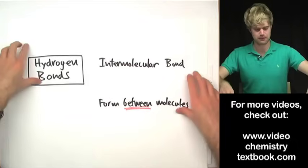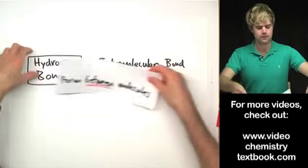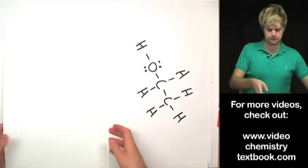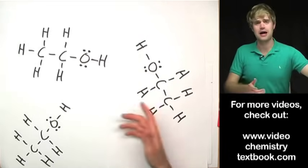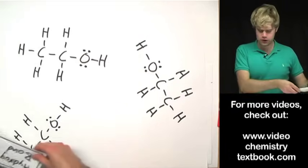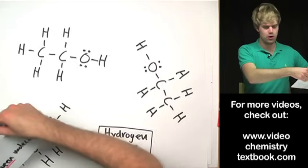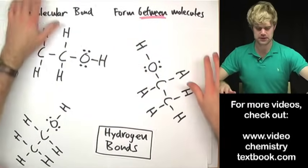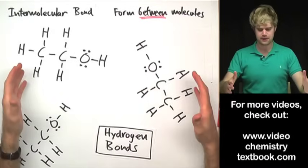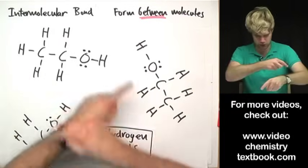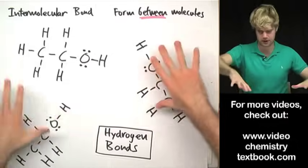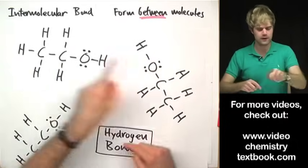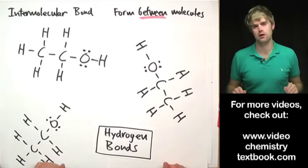Let's look at hydrogen bonds in some ethanol molecules. Ethanol is an alcohol, and if we could take a drop of ethanol and zoom in zillions and zillions of times, this is what we'd see: a bunch of different molecules all twisting around into different orientations. So where are the hydrogen bonds in these molecules?